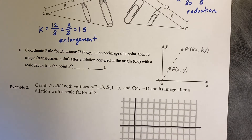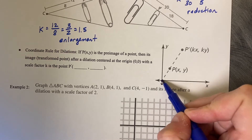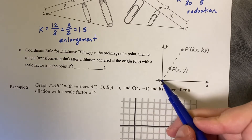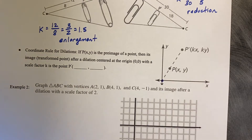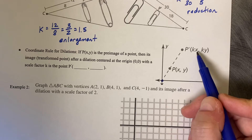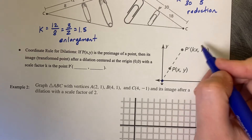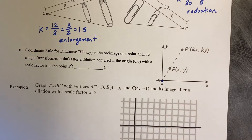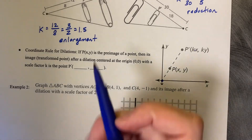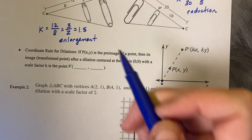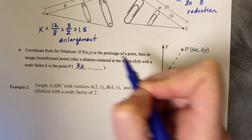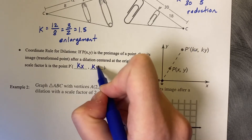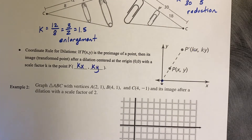There is a coordinate rule for dilation from the origin — the center of your coordinate grid. The rule is that you take each coordinate point and multiply it by the scale factor K. So going from the origin, you do K times X and K times Y: just multiply each coordinate point by your scale factor.